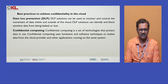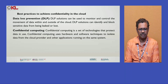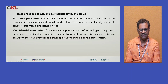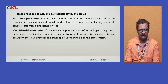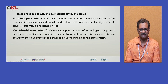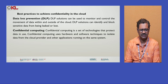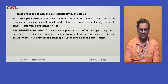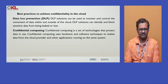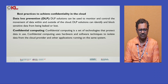Third one is Data Loss Prevention (DLP). When data is moving outside, these solutions can identify and block sensitive data being leaked or lost. Suppose any data is leaked or lost, that can be identified by DLP solutions. This monitors what data is being observed by other persons. Next, confidential computing — this is a set of technologies that protect data in use. Confidential computing uses hardware and software techniques to isolate data from the cloud provider and other applications running on the same system.